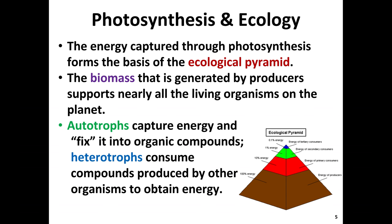Look at this ecological pyramid and the energy captured through photosynthesis. We can study how energy is being produced by each level of organisms on Earth. 100% of the energy consumed through that pyramid starts with the energy of the producers. Then 10% of the energy comes from primary consumers — the organisms consuming the producers. Then 1% comes from secondary consumers, and 0.1% comes from tertiary consumers at the top of the pyramid.